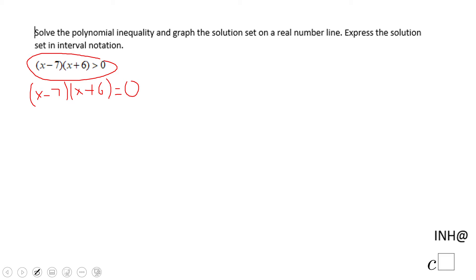To get the moment where this polynomial equals zero, that will be x equals seven because we have x minus seven equals zero, and x plus six equals zero for the second factor, which gives us x equals negative six.